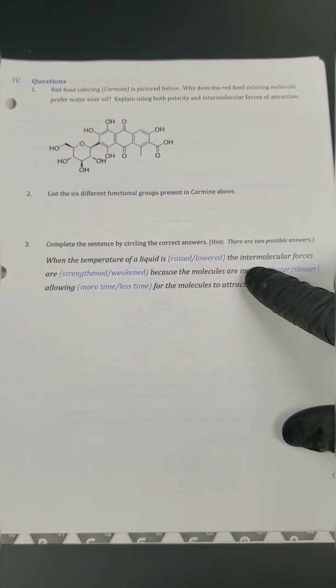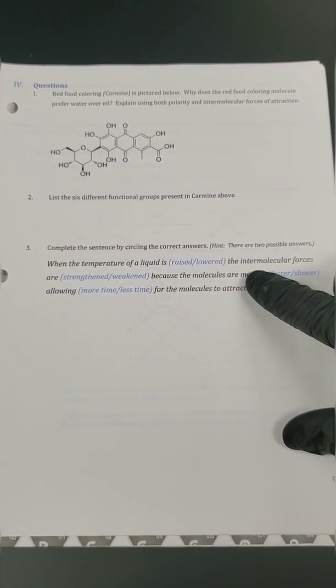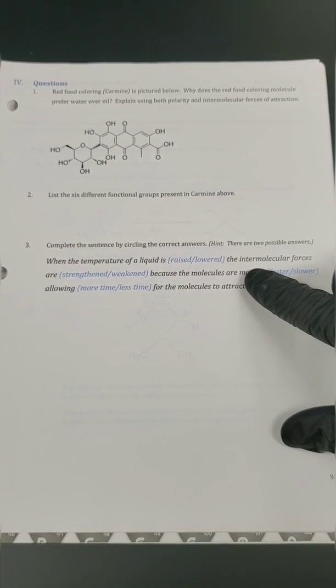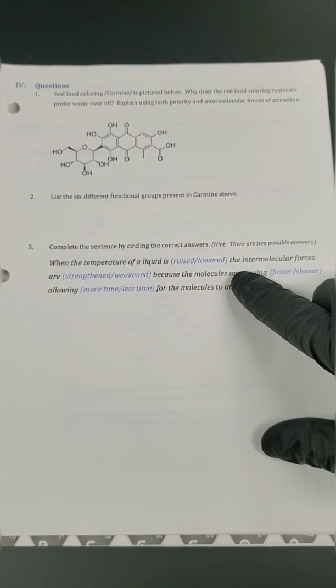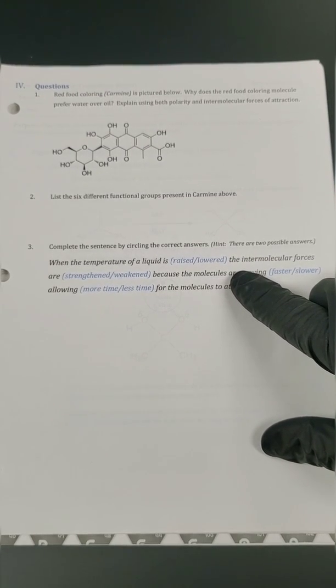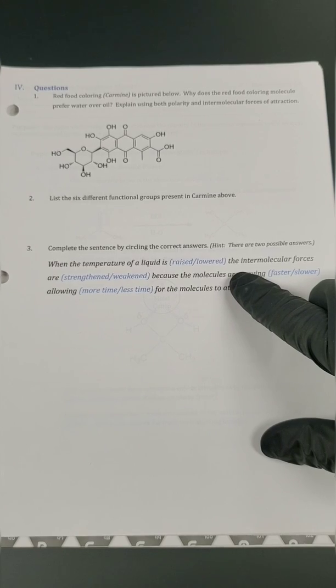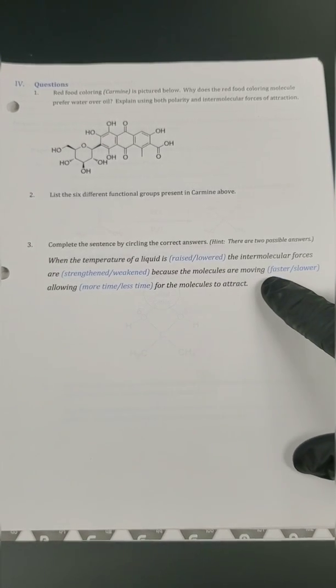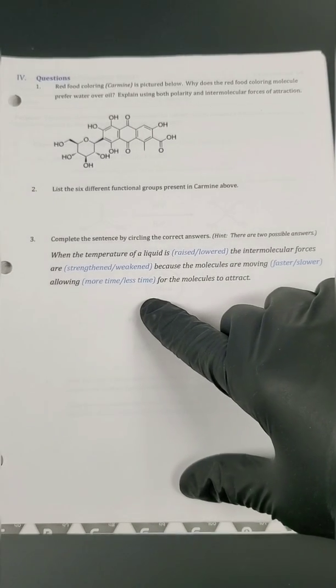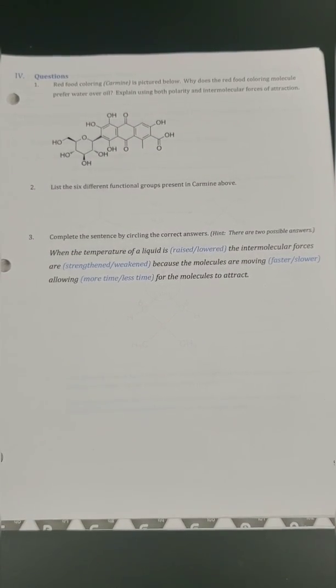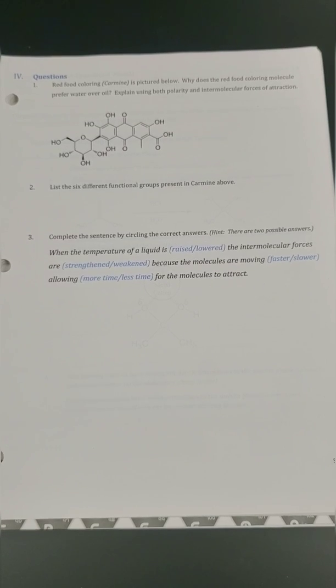And then lastly, as we look at this one, think about what happened and what you should have sketched in your lab book based on that jellyfish versus green kool-aid example. When the temperature of liquid is either raised or lowered, how did it affect that glue? Did it strengthen it or weaken it? Did they move faster or slower at hotter or colder temperatures? And if that's happening, the speed of those molecules, does that give them more time to attract or less time to attract? And again, those answers you can check in the lab book. And this lab's done.